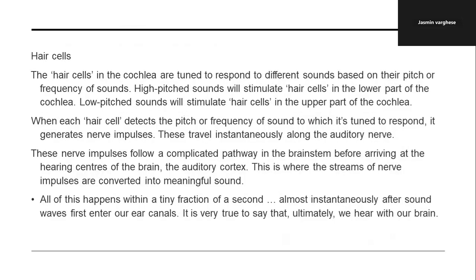This wave-like fluid motion stimulates microscopically small hair cells. The hair cells in the cochlea are tuned to respond to different sounds based on pitch or frequency. High-pitch sounds stimulate hair cells in the lower part of the cochlea; low-pitch sounds stimulate hairs in the upper part. When each hair cell detects the pitch it is tuned to, it generates a nerve impulse that travels along the auditory nerve. These impulses follow a complex pathway in the brainstem before arriving at the hearing center of the brain — the auditory cortex — where they are converted into meaningful sound.